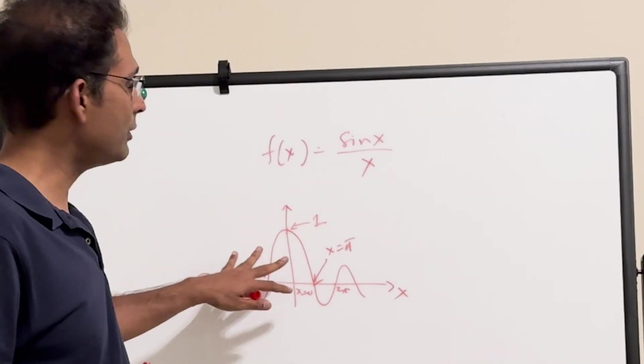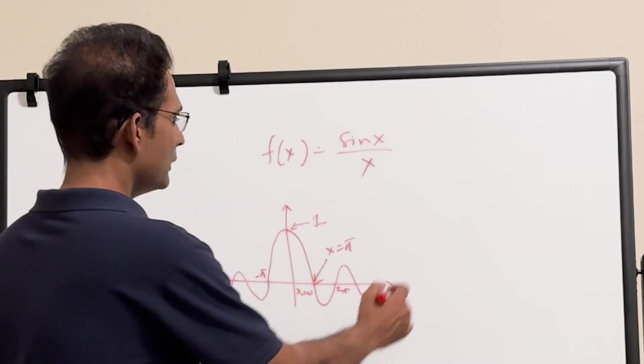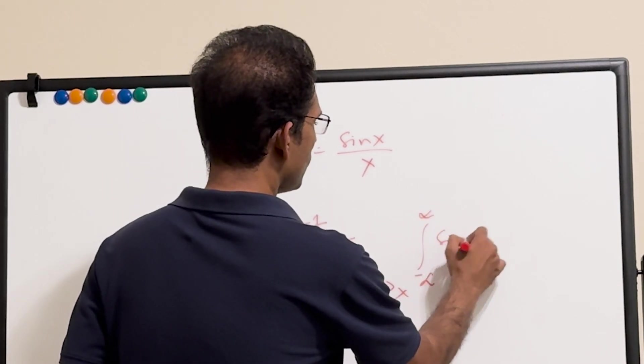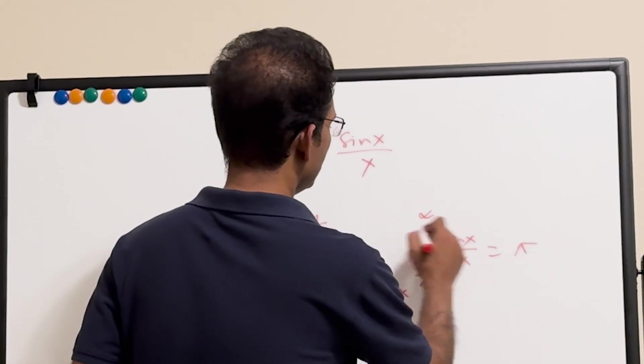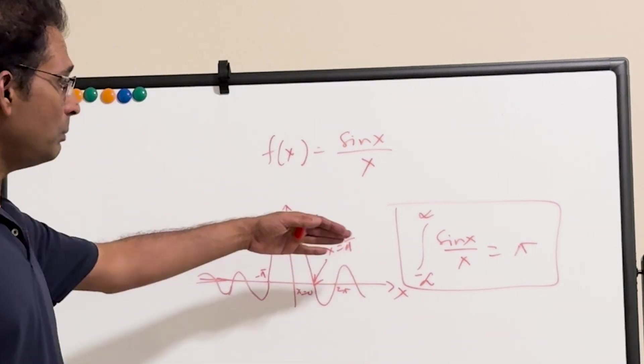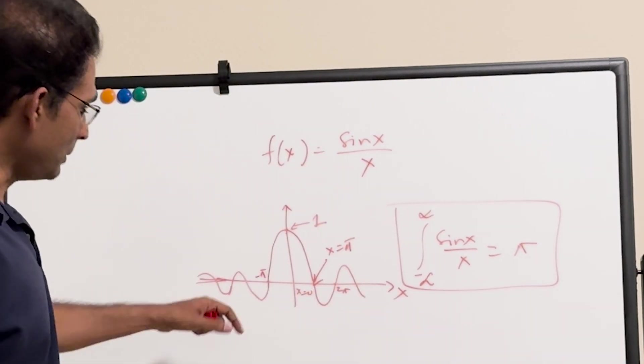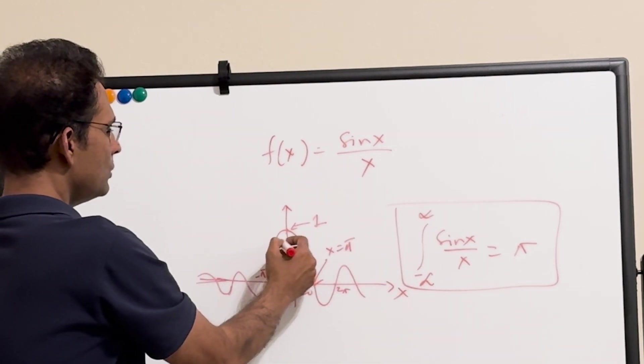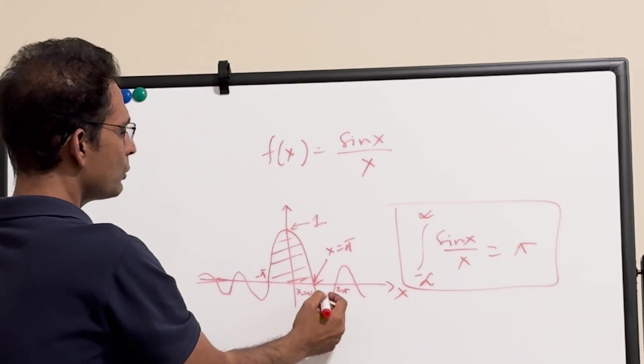Now, this graph has a finite area under it. So that means minus infinity to plus infinity, sin x over x is equal to pi. So what does that mean geometrically? The meaning of the integral is that you add up all these areas with proper sign, right?